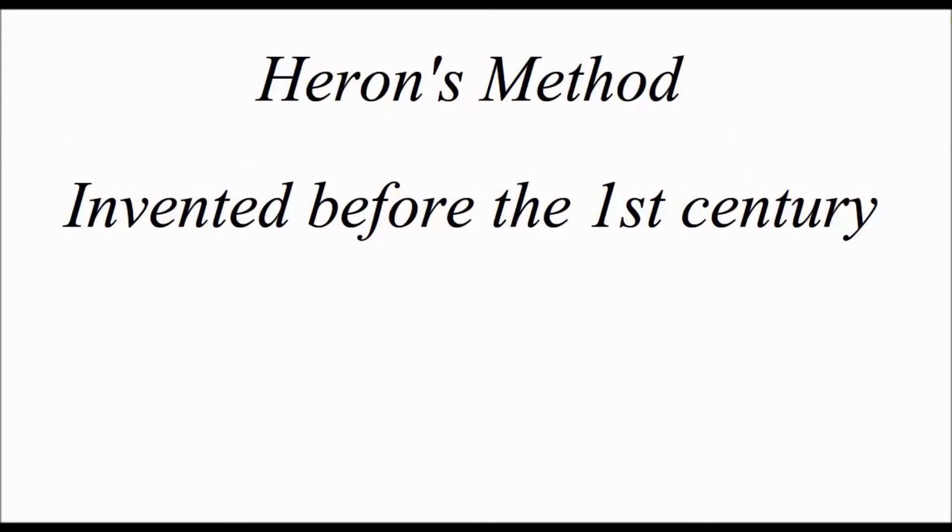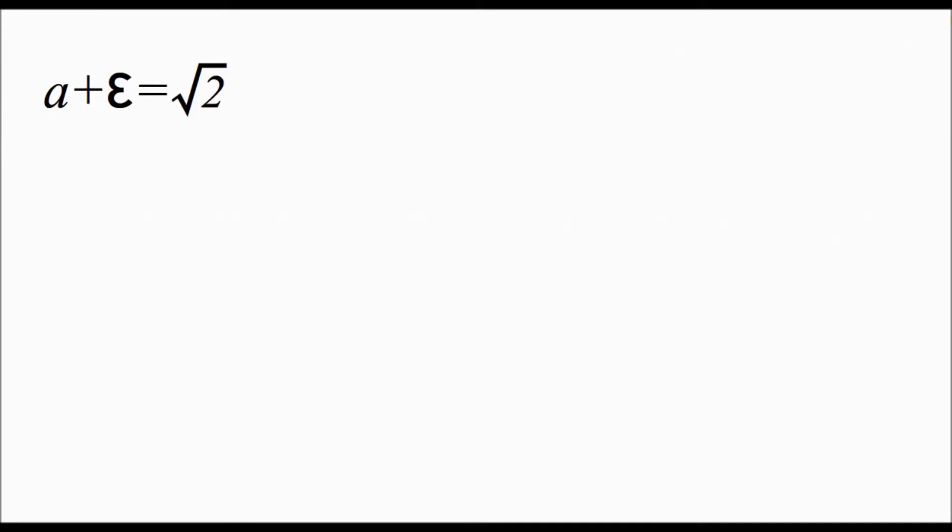We can start with a plus epsilon equals square root of 2, where a is a rational number close to square root of 2. Or in other words, a squared is close to 2, and epsilon is the small difference between a and the square root of 2.